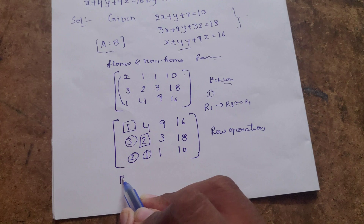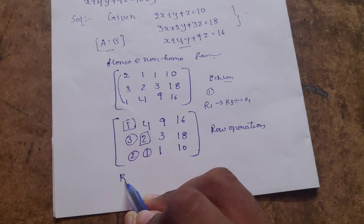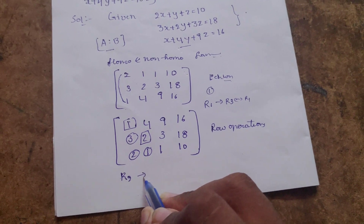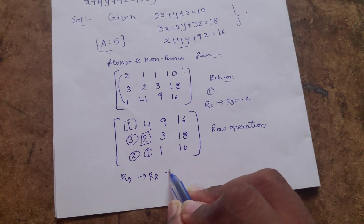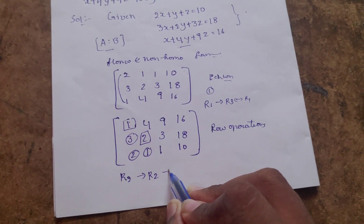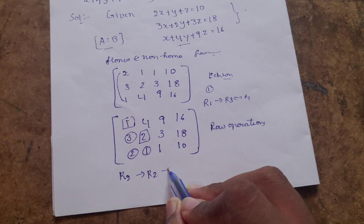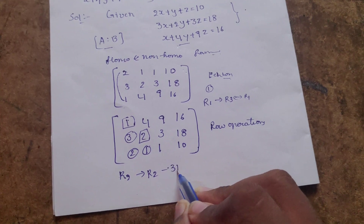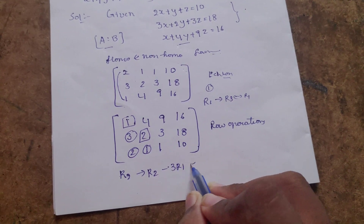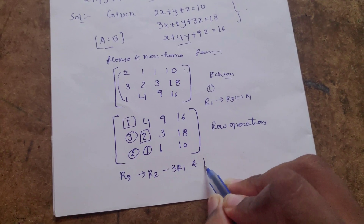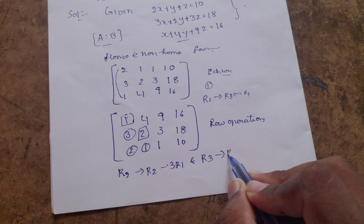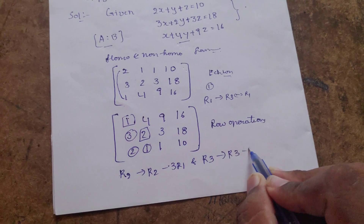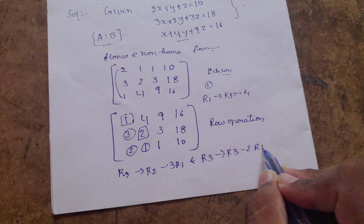R2 becomes R2 minus 3 times R1, and R3 becomes R3 minus 2 times R1.